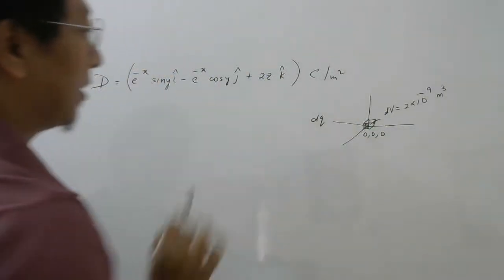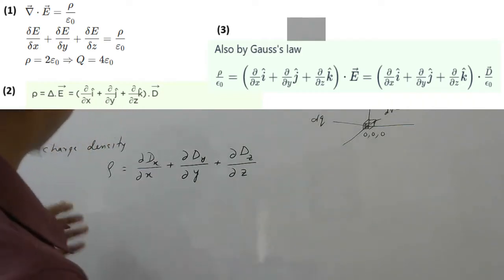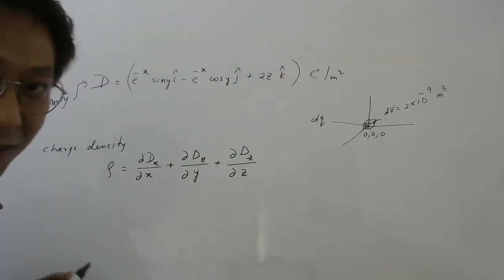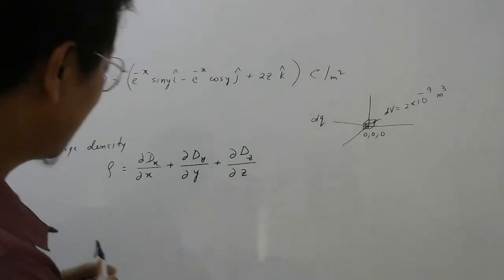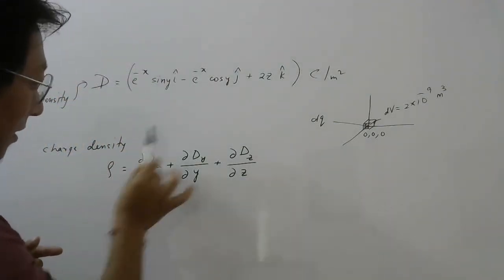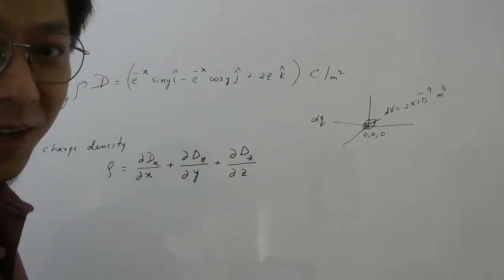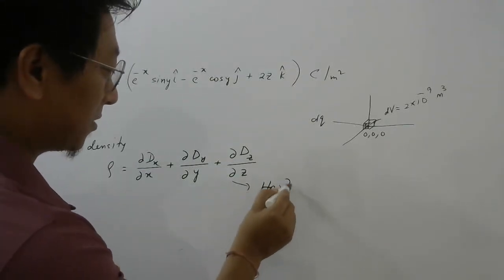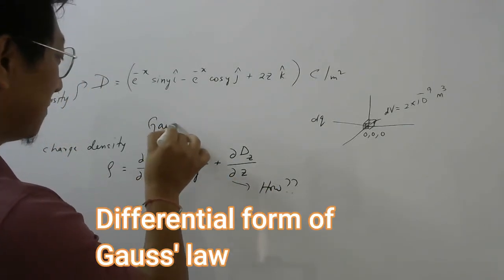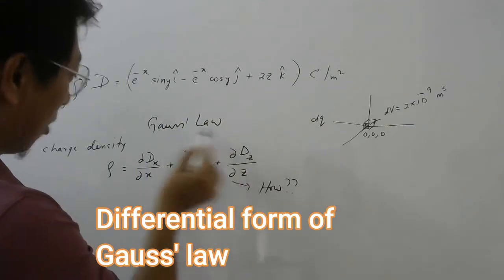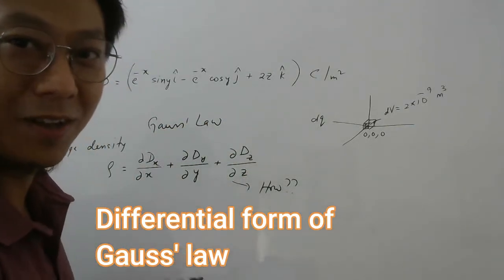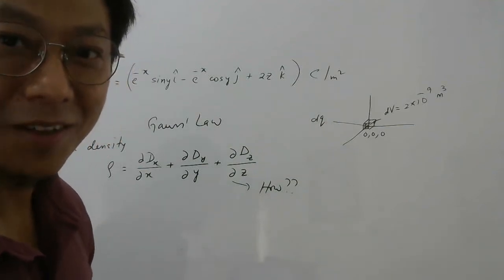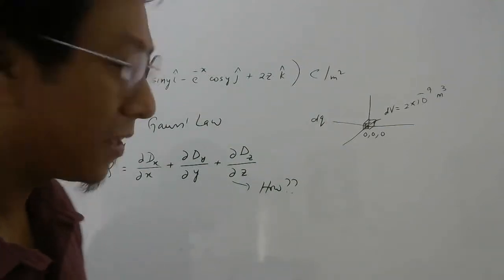In the solution they have used this formula where the left side is charge density — charge per unit volume — and the right side is this complicated-looking formula. My question is: where does this formula come from? They say it is Gauss's law, but we don't study Gauss's law this way in Class 12. That is the problem.